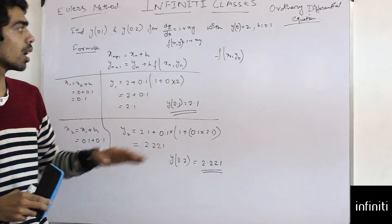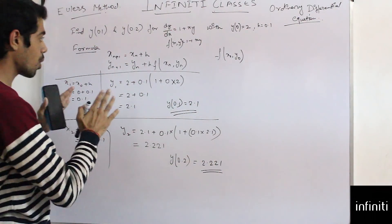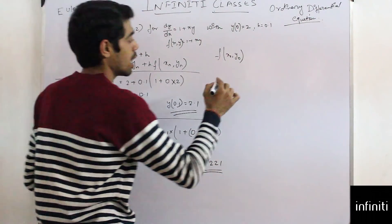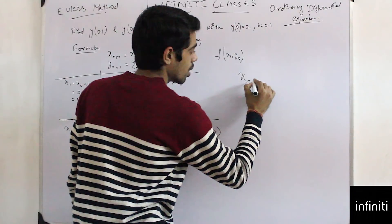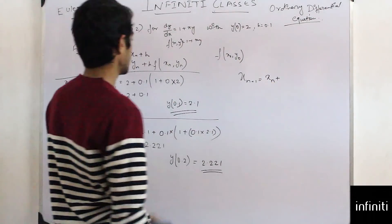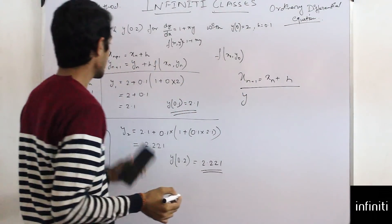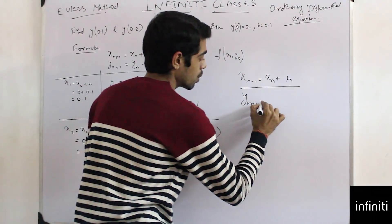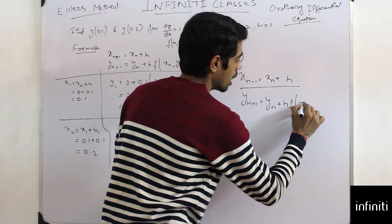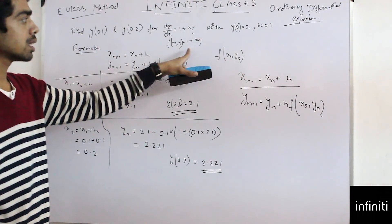To solve using Euler's method there is a very easy formula to remember. To find x_(n+1) we use: x_(n+1) = x_n + h. And to find y_(n+1) we use: y_(n+1) = y_n + h · f(x_n, y_n).